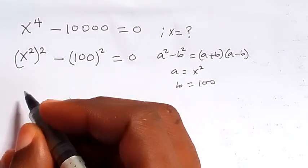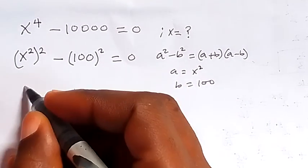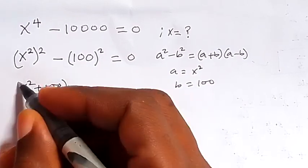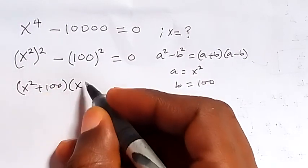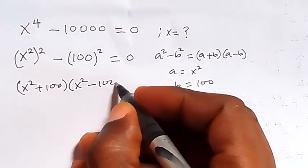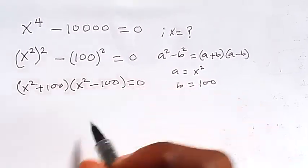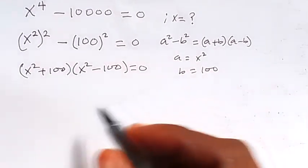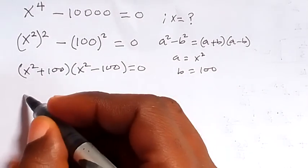We have a plus b, so this becomes x squared plus 100, then multiply by x squared minus 100, which equals 0. So we have factorized that applying the difference of two squares.